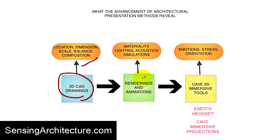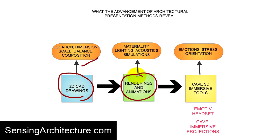But to take things to the next level in terms of presenting or communicating ideas and creating images that have more information within them, you can turn to renderings and animations. Such 3D virtual renderings and animations can reveal things like materiality, lighting, acoustics, and other types of simulations which can mirror sensory attributes that a particular architecture might have. Still renderings or animations are great for presentations with clients or for communicating with your own design team.